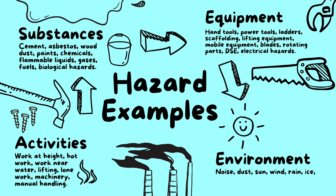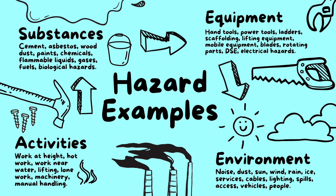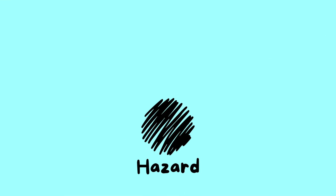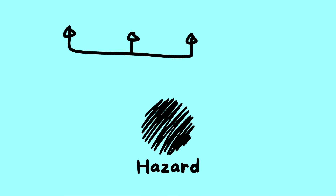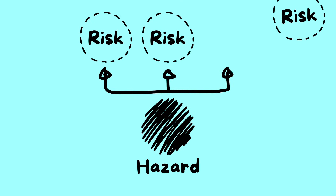Examples of environmental hazards include noise, dust, sun, wind, rain, ice, services cables, lighting, spills, access, vehicles, and people. Hazards are not risks themselves, but they create risks.